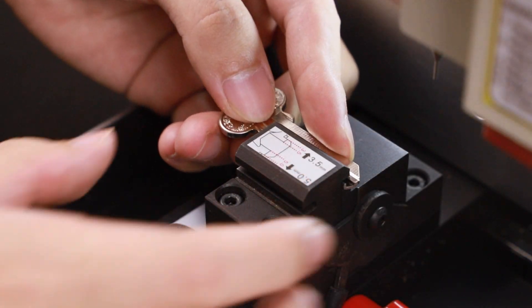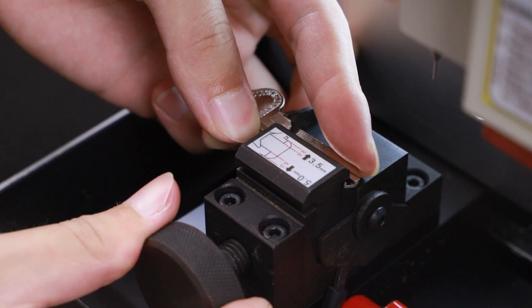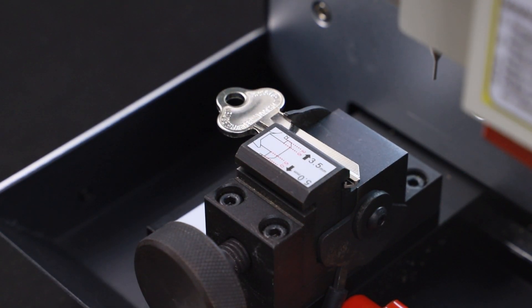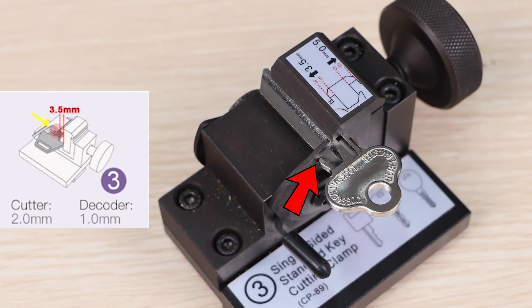After decoding is done, please fix a new key blank by the shoulder stopper at 3.5 millimeters side shown in the figure. Make sure the key blank is fixed flatly and the jaw is clean of shavings.